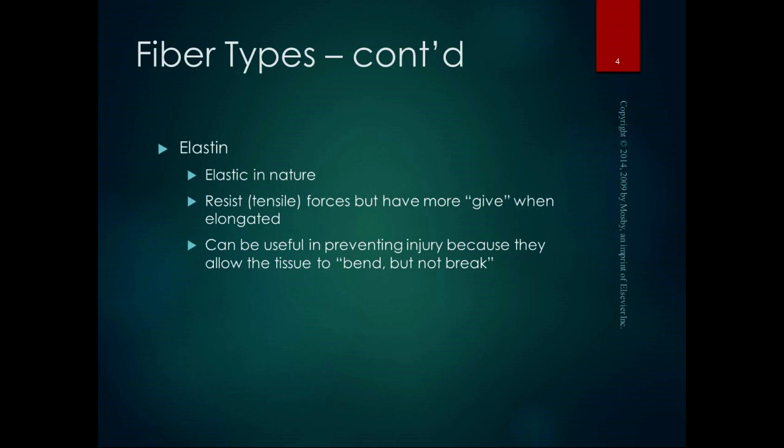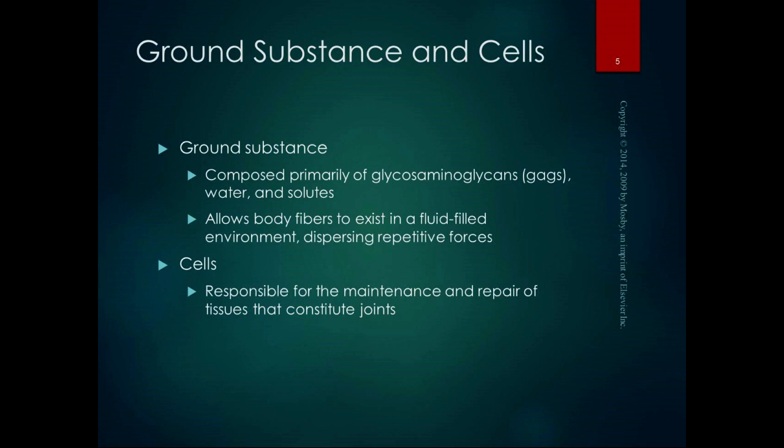Elastin resists tensile forces but has a little more give than collagen. A lot of times elastin is used in tissues that have to bend and stretch a lot. It's useful for preventing injury because it allows the tissue to bend but not be brittle. Ground substance is primarily composed of glycosaminoglycans, or GAGs, water and solutes. It allows the fibers to exist in a fluid-filled environment and helps to disperse repetitive forces.